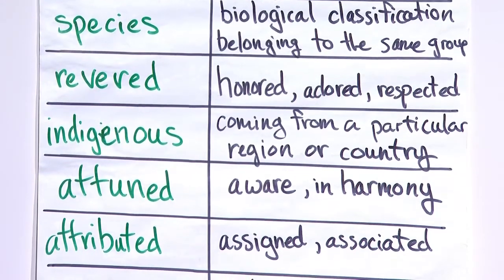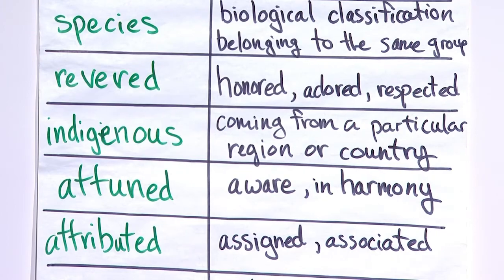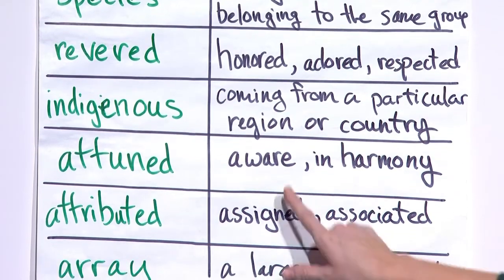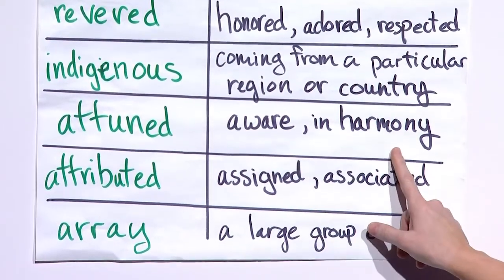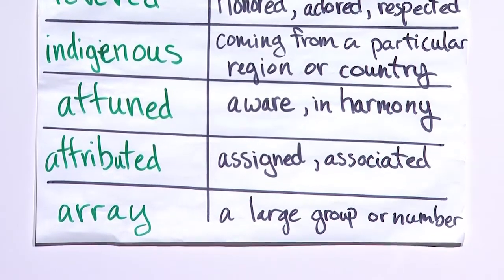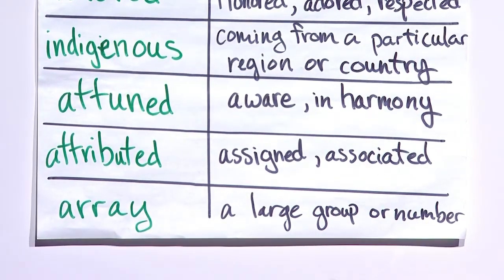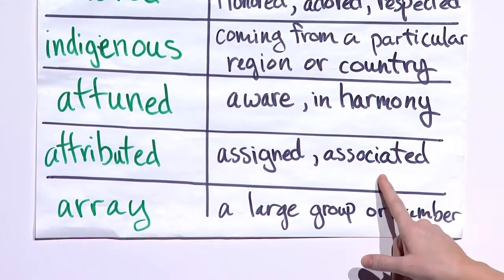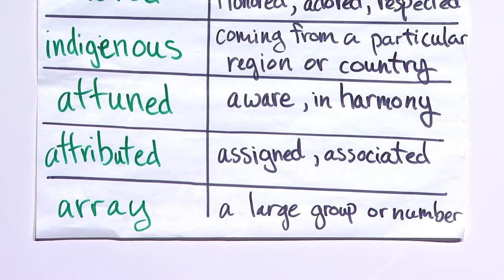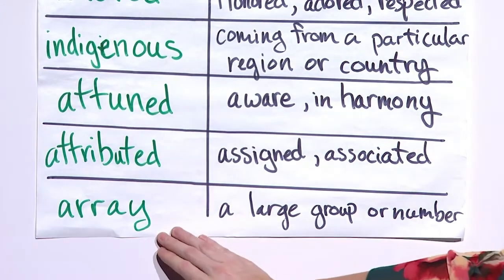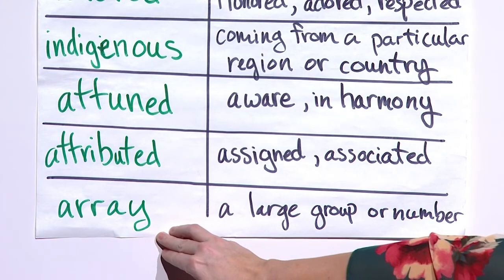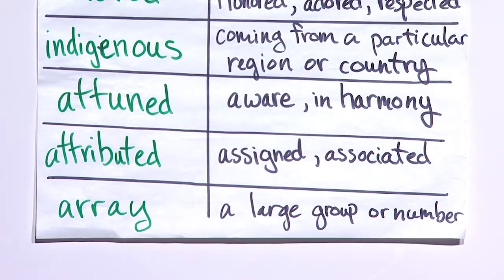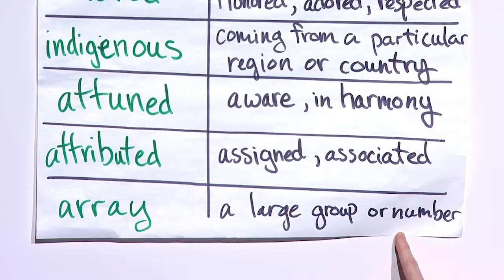We will see the word indigenous, which means coming from a particular region or country. Attuned means aware or in harmony. Attributed means assigned or associated with something. And the last word is array — an array is a large group or number of something.